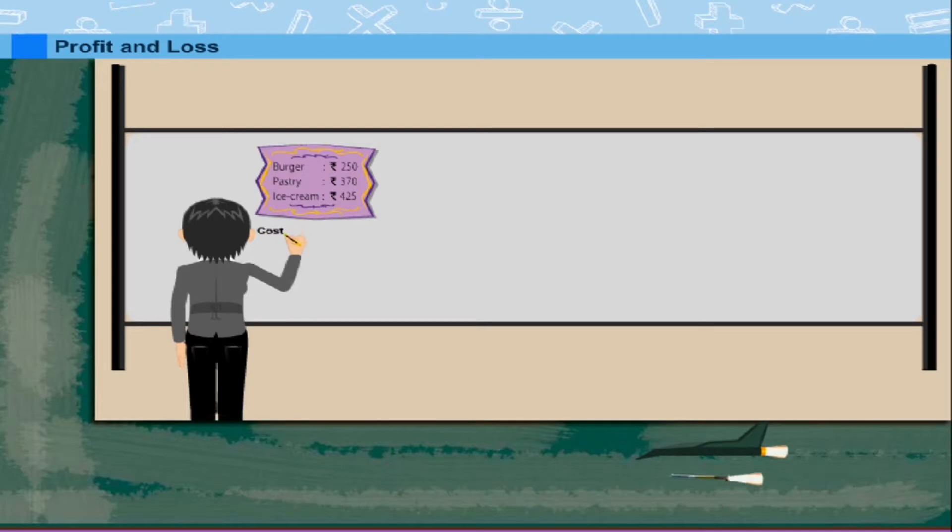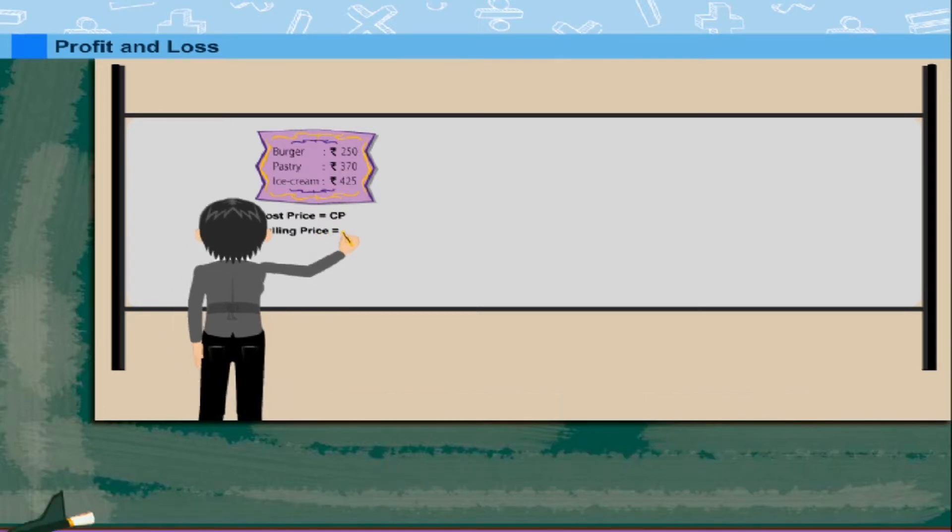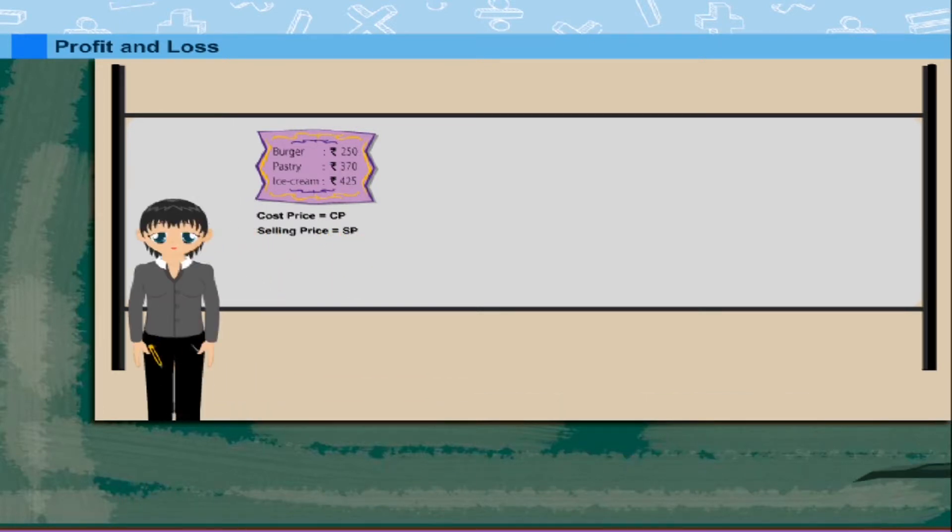Nancy ma'am explains that CP is the cost price. SP is the selling price. And profit is SP minus CP where SP is greater than CP.